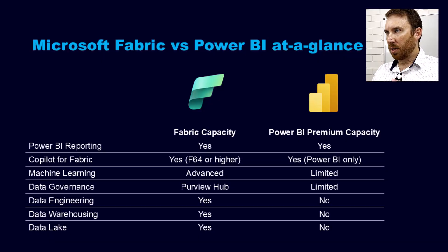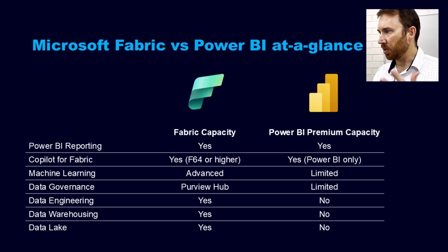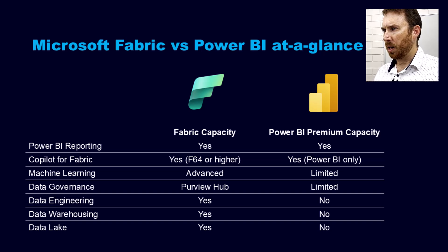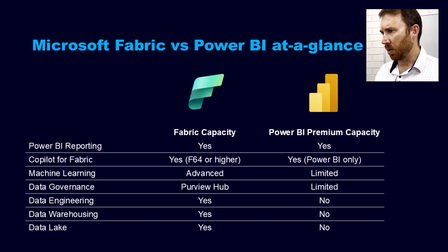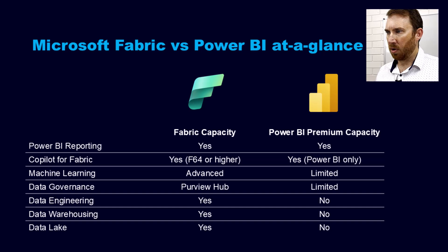All right, so on a page here, at a glance, let's have a look at the differences here between Fabric and Power BI. I'm thinking there's a premium capacity because looking for stations are those that are on premium. And if you're not on premium, you can still understand what you get when you go to Fabric. So let's look at the first line here.